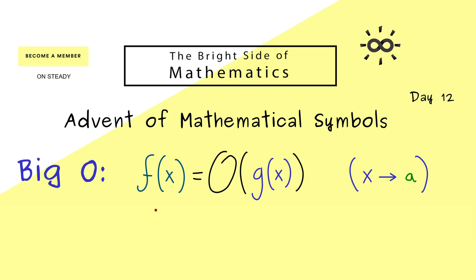Indeed, it simply means that the function f on the left-hand side does not grow stronger than the function g on the right-hand side when x goes to the number a. Hence, usually this is helpful when you are not able to put in a into the two functions. For example, we always have this case when a is the symbol infinity.